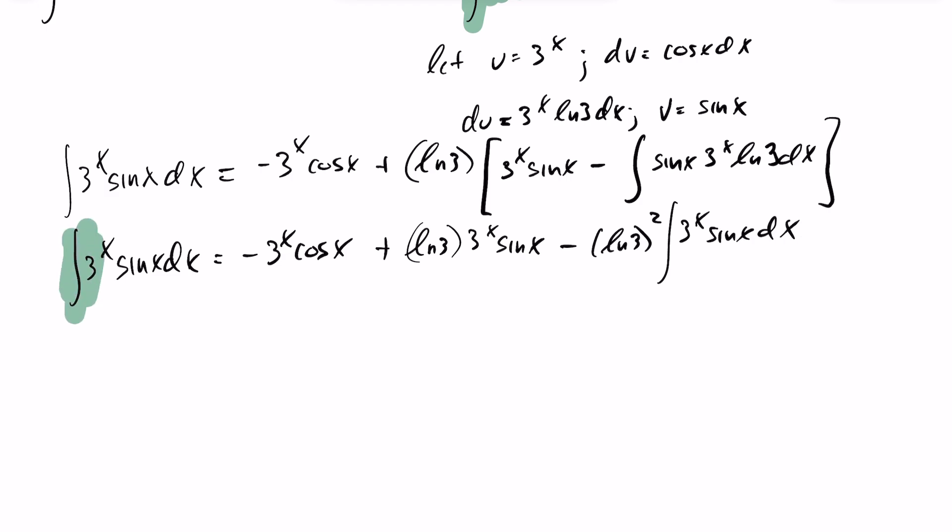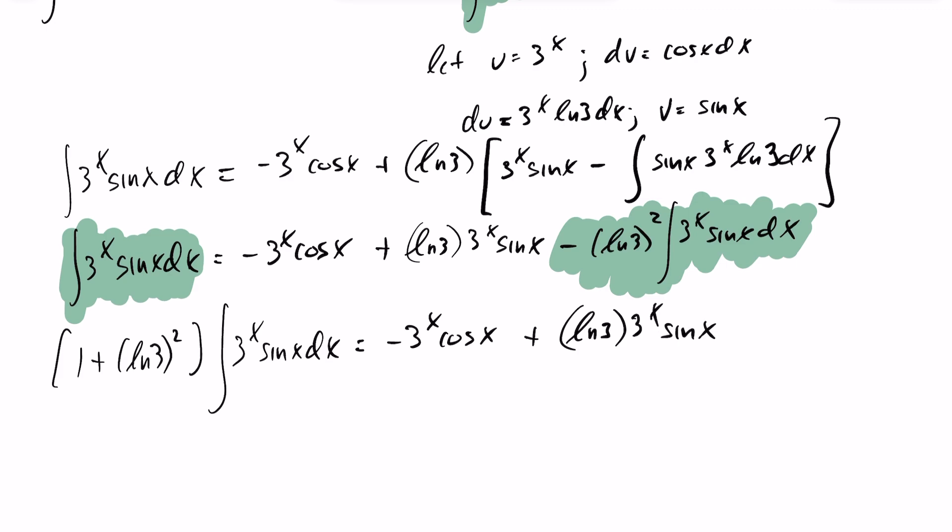So now you can see I have my integral I want to evaluate, and I actually have it on this side as well with a different coefficient. So I'm going to bring those both over to one side. Bringing this to the other side, we're going to end up getting 1 plus ln(3) squared times the integral of 3^x sin(x) dx is minus 3^x cos(x) plus ln(3) 3^x sin(x).